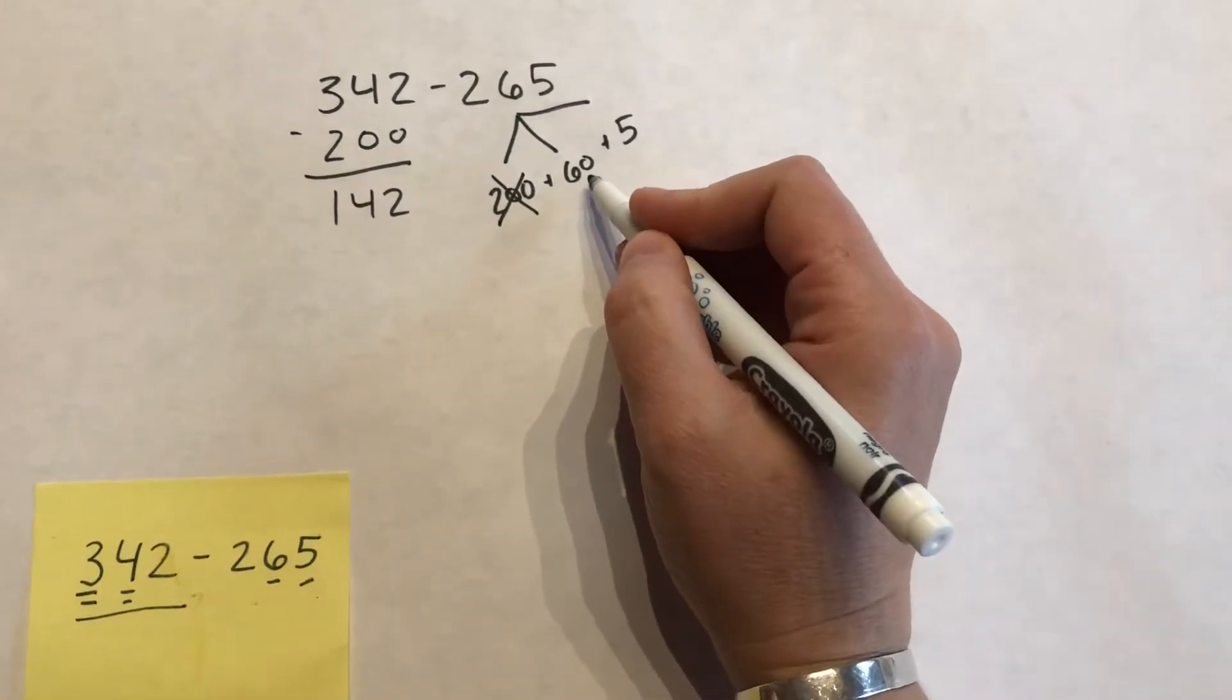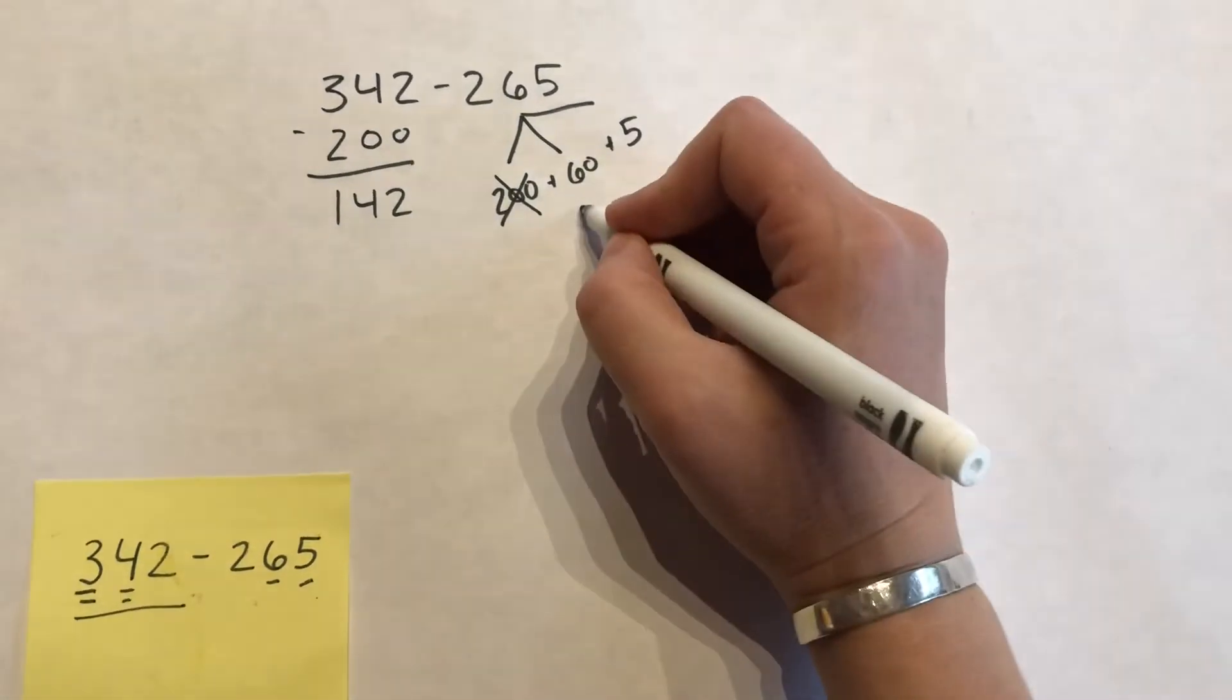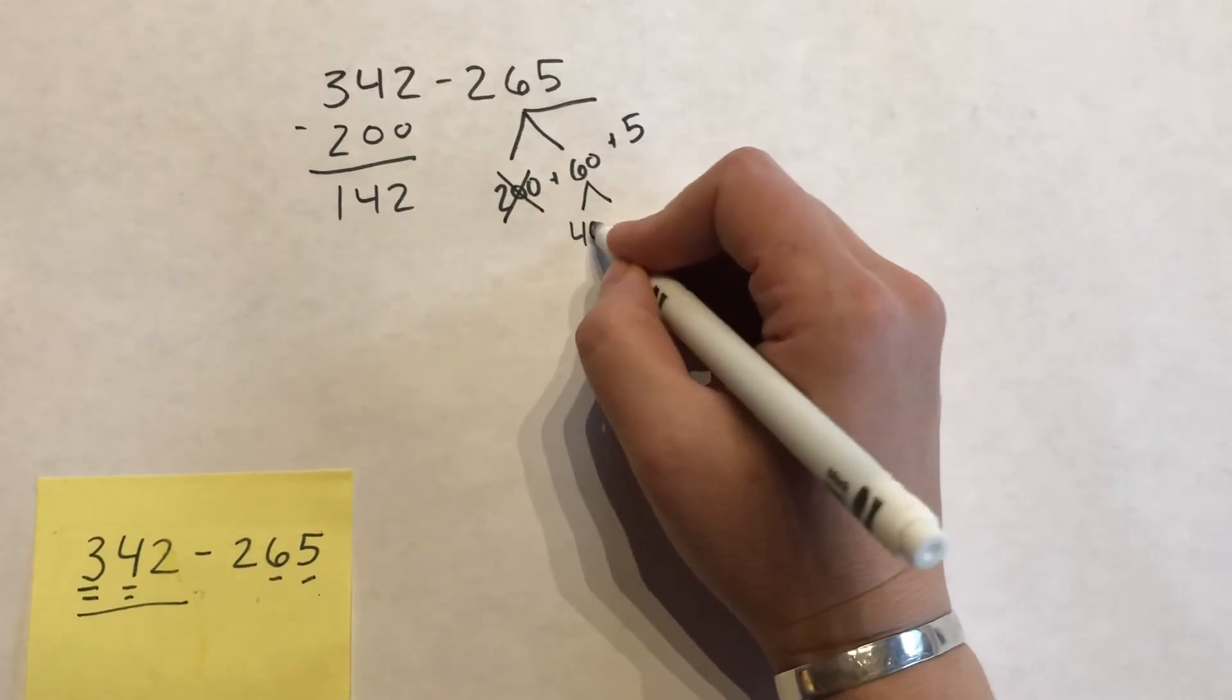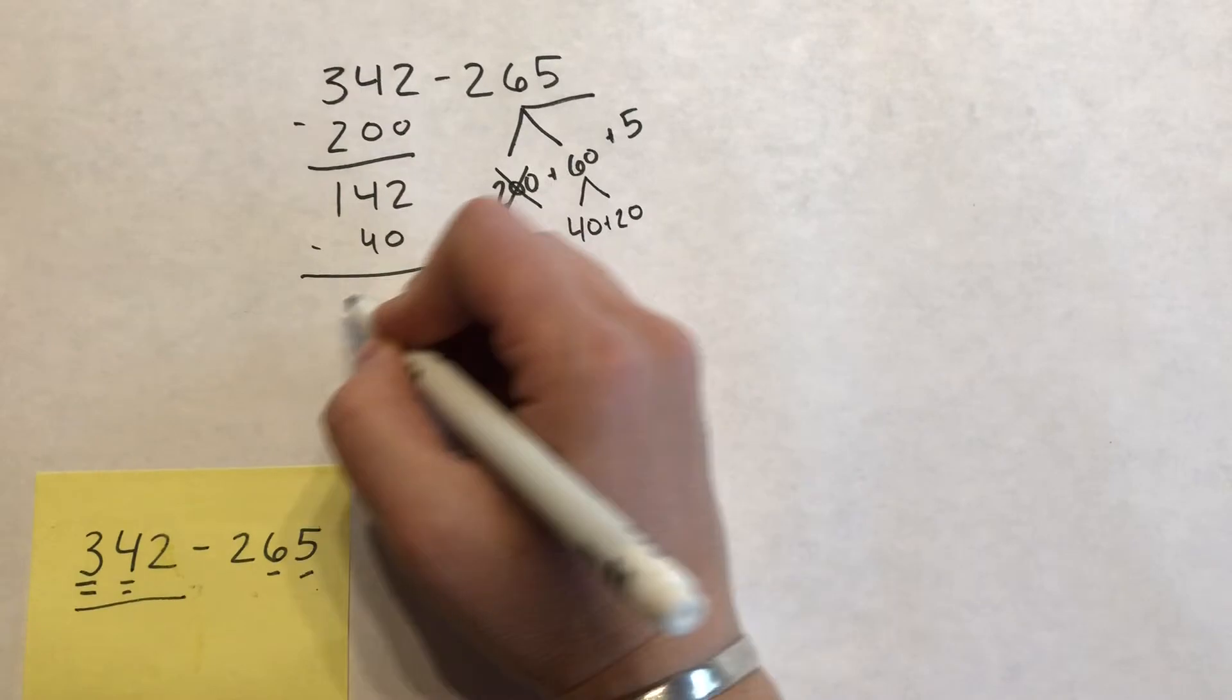Now I have to take away 60, but I can see I only have 40, I have four tens, so I'm going to think about 60 as 40 and 20. So if I take that 40 away first,